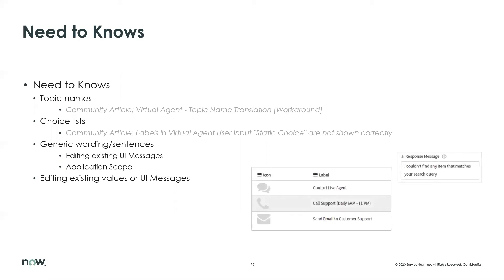Regarding editing existing values or UI messages — for example, the menu item labels — are you going to change these labels directly, or are you going to update the translated text records as I showed in the demo? Same for strings within topics: are you changing those directly, or are you updating the UI message records? I would suggest, if possible, go for updating the UI messages and translated text records — that helps maintainability a lot.